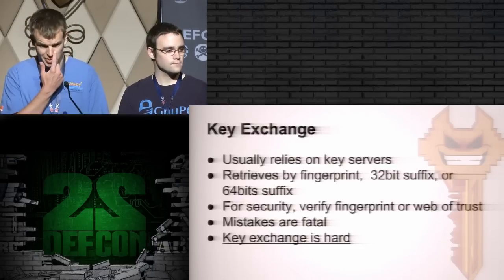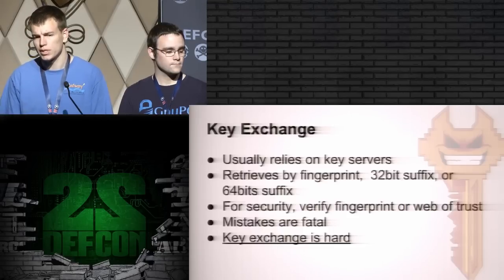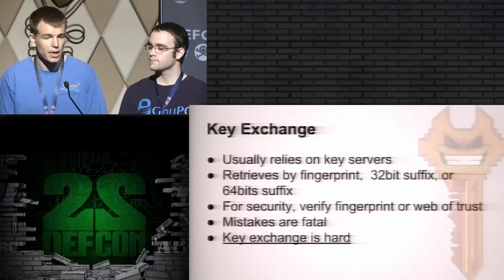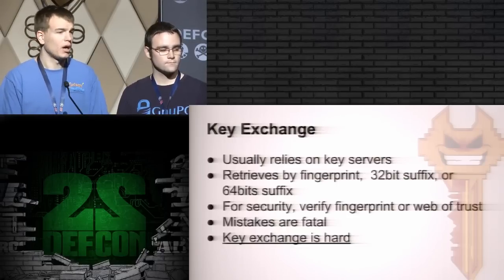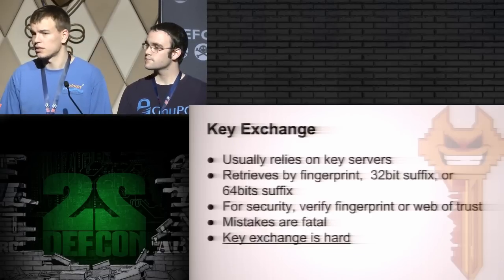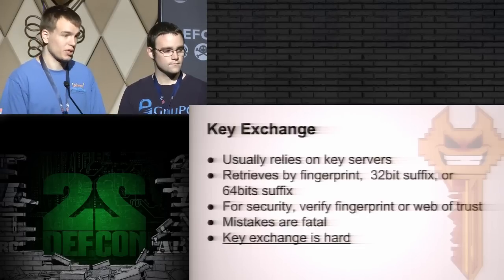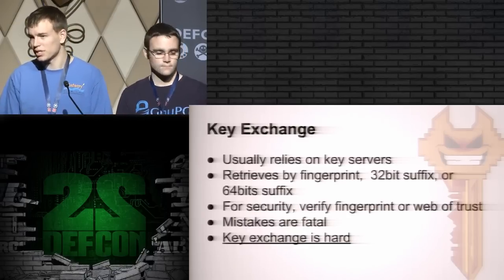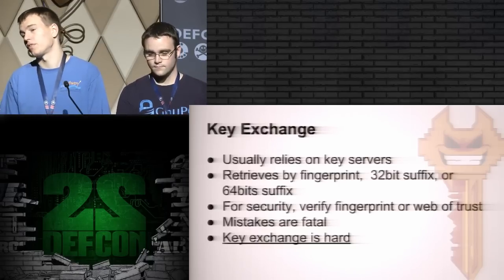In order to exchange a secret message, you must get the receiver's key. This is normally done via the GPG key servers. When you specify a unique key on the GPG key servers, you specify either a fingerprint, 32-bit ID, or a 64-bit ID. You receive the key, and once you receive it, you verify that it's the key you think it is — either by manually checking the fingerprint character by character, or by using the web of trust. The big problem is that mistakes are fatal. If you trust a key you shouldn't be trusting, there's no recourse — you've lost. Which makes this key exchange part very, very hard.